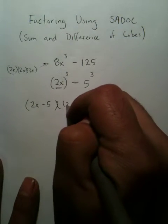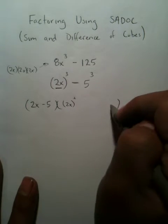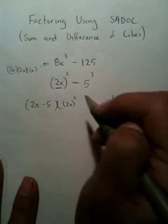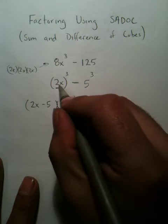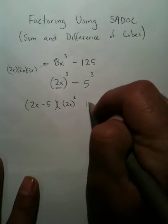However, in this piece, you're going to take this 2x and square it, and you're going to take your 5 and square it. The middle term is a multiplication of both the first base and the second base, which is 10x.